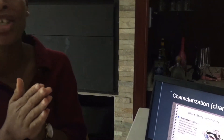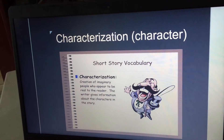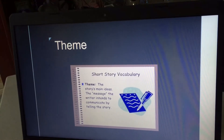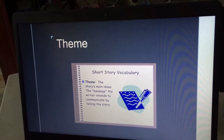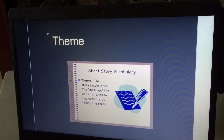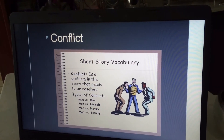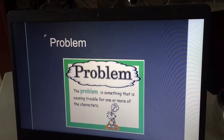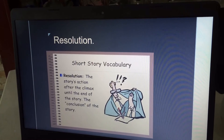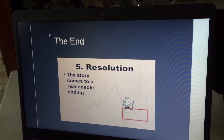Characterization, in simple terms, refers to the characters — the imaginary characters you come up with in the story. The theme is the story's main idea, the message the writer intends to communicate. A theme can be love, betrayal, lust, or jealousy — whatever main idea is coming out of the story, that is your theme. Conflict is the problem in the story that needs to be resolved — something causing trouble for one or more of the characters. Resolution is the story action after the climax until the end, which is basically the conclusion of the story.